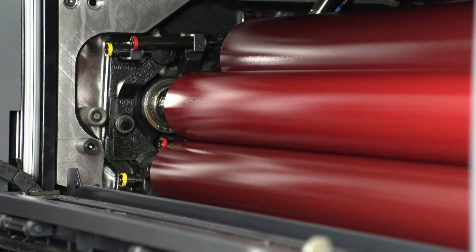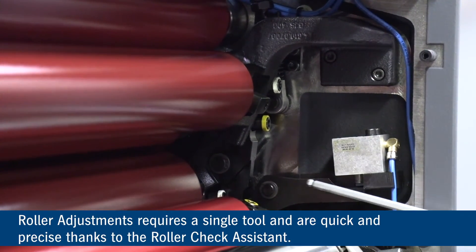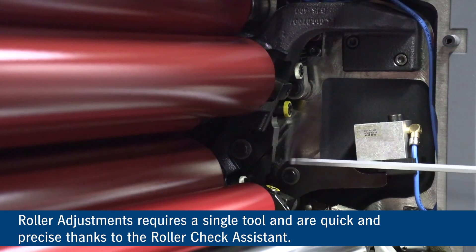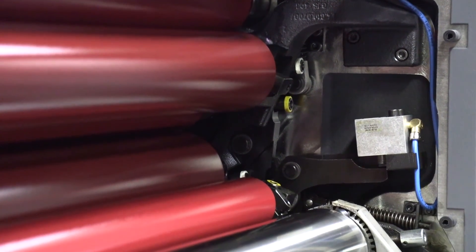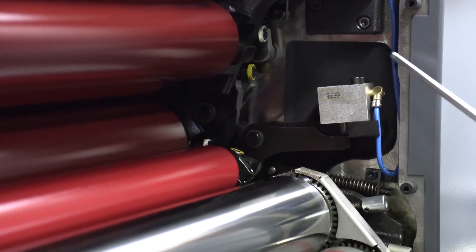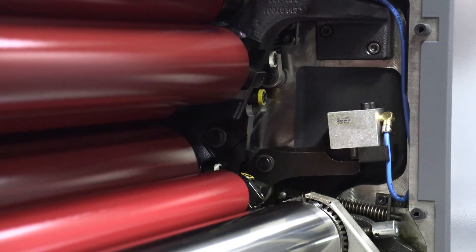If we go to the other side of the unit, over this side of the printing unit we have adjustments for the second inking roller to the plate, first inking roller to the plate. We also have dampening settings here which we can adjust accordingly to set the dampening unit as well. We also have adjustments here for the actual rider roller to the inking form roller.